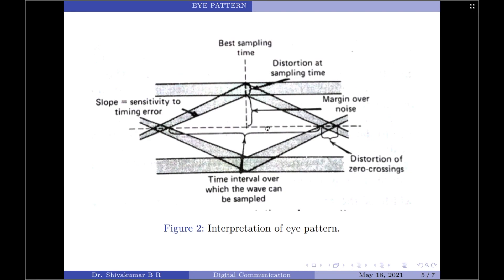At the very first, the width of the eye opening defines the time interval over which the received wave can be sampled without error from the intersymbol interference. This is denoted by this portion of the eye pattern. Please note, from this particular edge to this edge is the time interval over which the wave can be sampled.